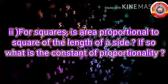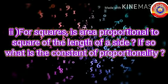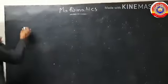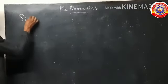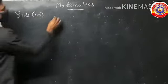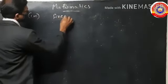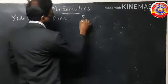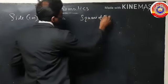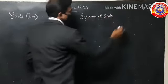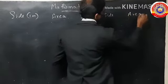The second sub-question says: for squares, is area proportional to the square of the length of a side? If so, what is the constant of proportionality? Let's start. Let side be in centimeters, and set up the columns for area and square of side, then compute area by square of side.